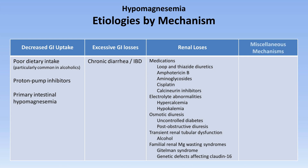Lastly, in the miscellaneous category is pancreatitis, where magnesium and calcium salts can be involved in the saponification of retroperitoneal fat. And magnesium can be quickly drawn up from the serum in the hungry bone syndrome, described in a little more detail in my video on hypophosphatemia.